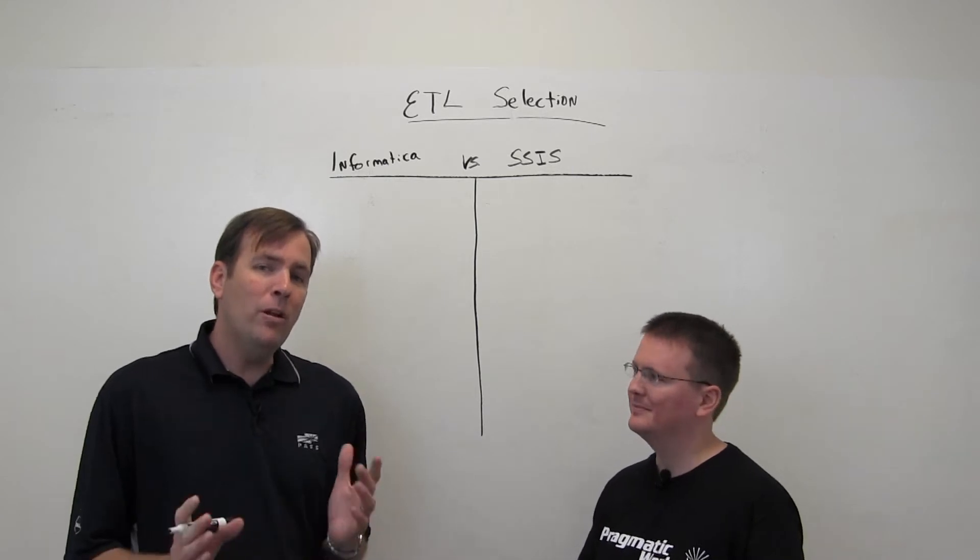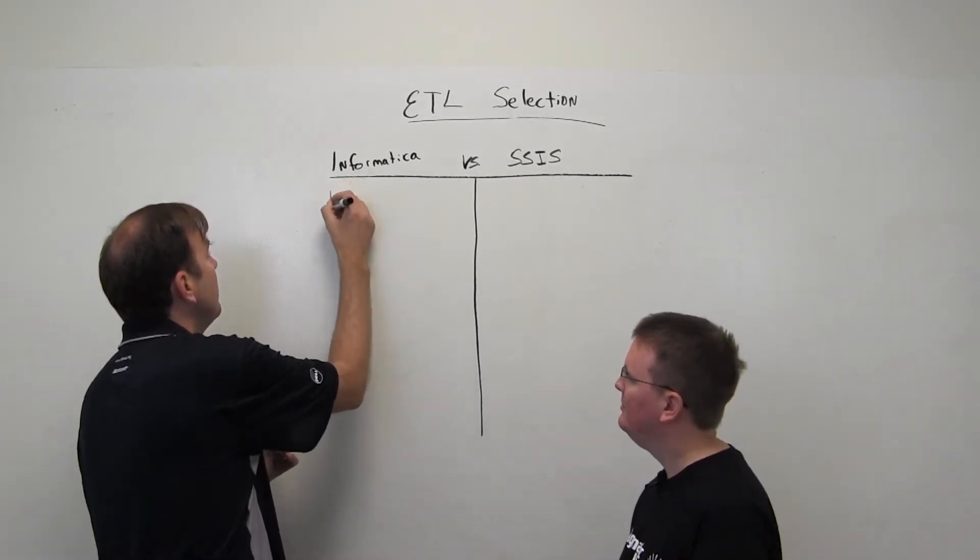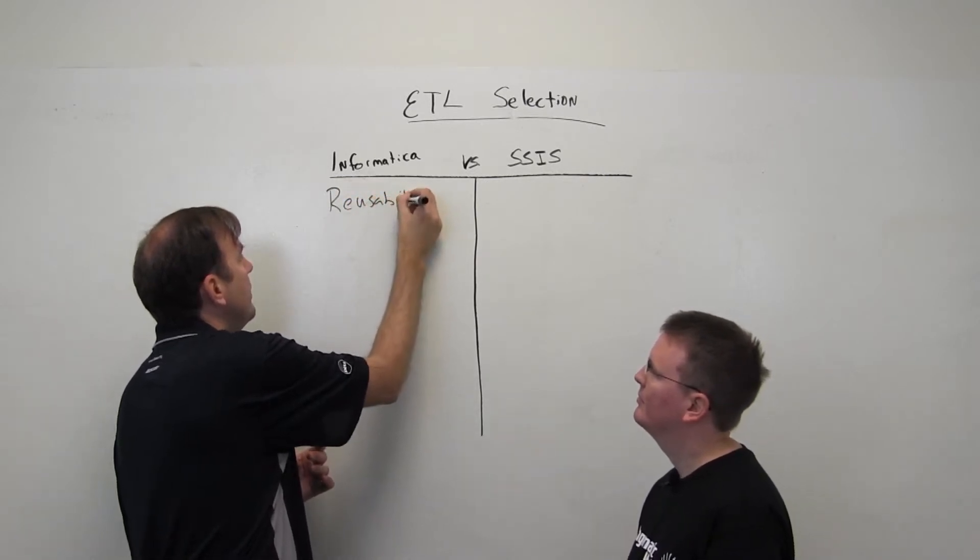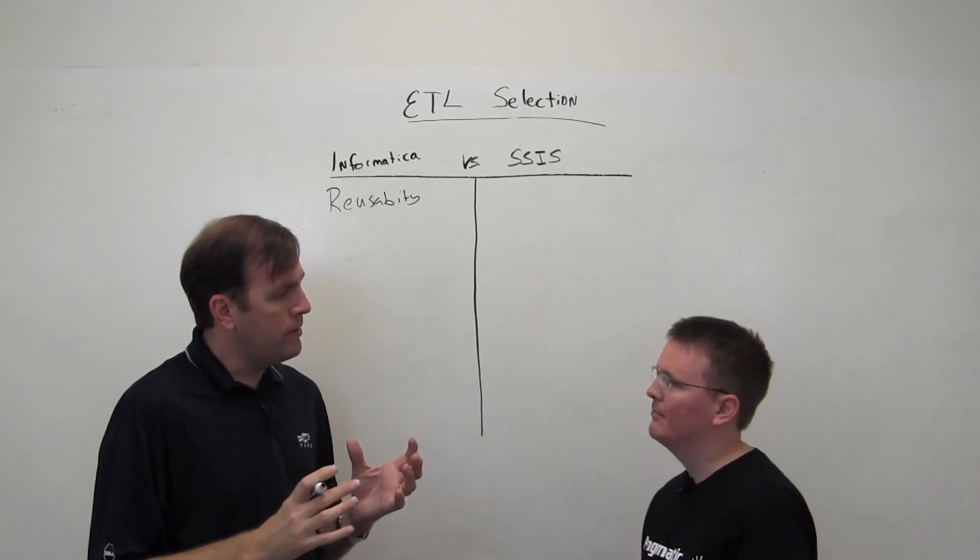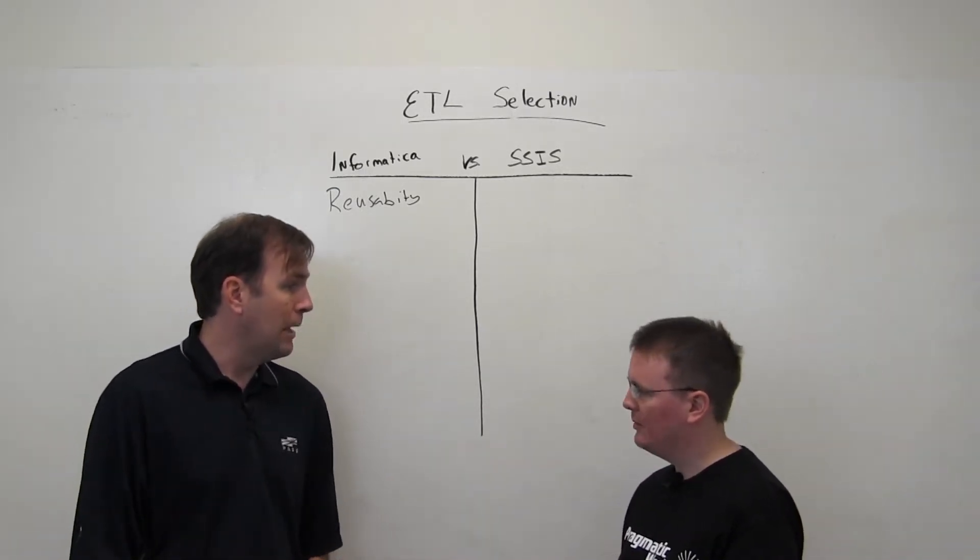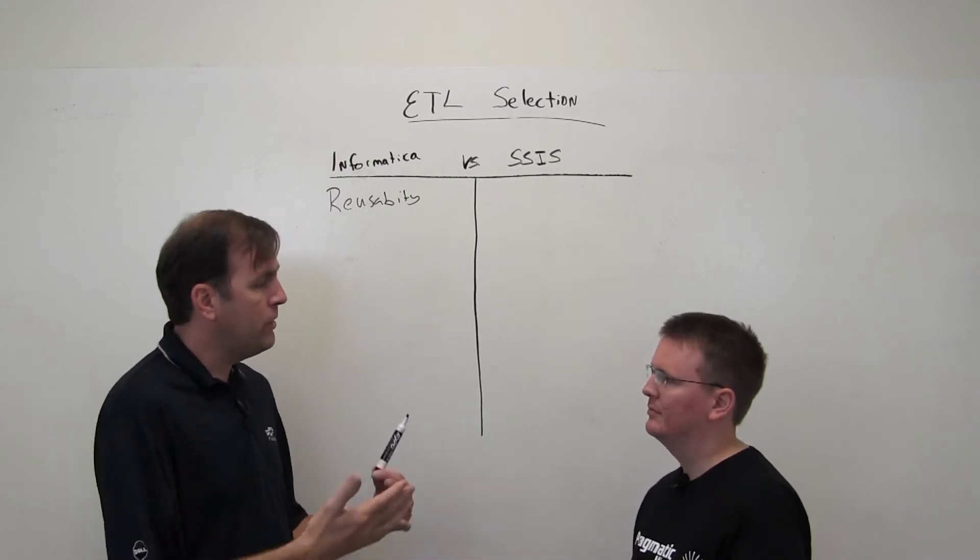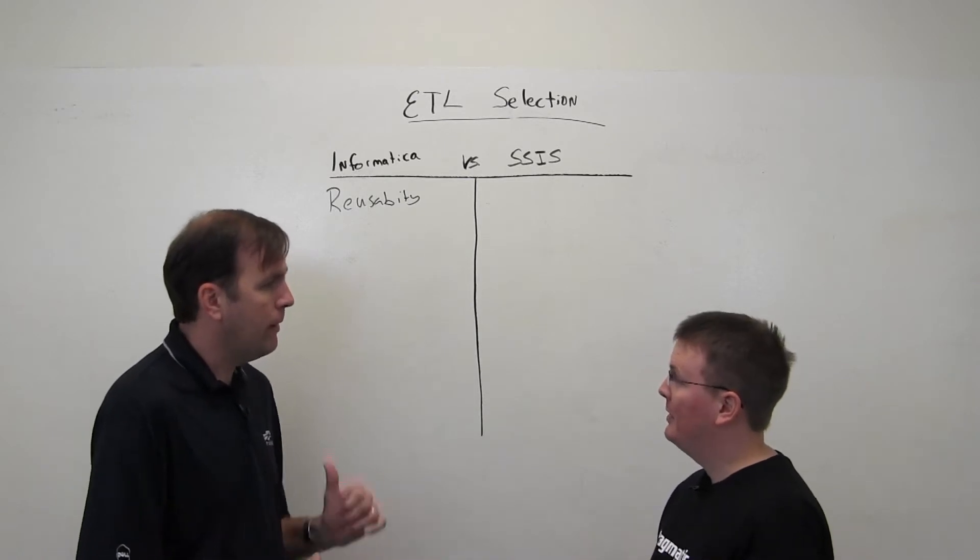And what we're going to start with, really, is one of the strengths I think Informatica has is really around reusability. What I mean by that is I can develop the data flow component one time. I can say this is the logic to encrypt some data. I do it one time, and I can use it across multiple different data flows, potentially. That's a great feature.